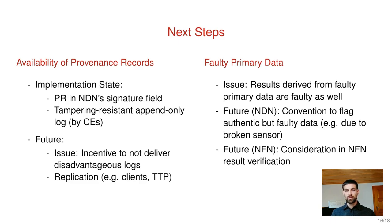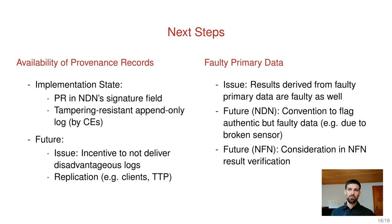We should also assume that results are faulty if they are derived from faulty data. For instance, if there is a broken sensor in a weather station and the sensor values are published in the network, then transformations — for example from Fahrenheit to degrees Celsius — are also considered faulty. We think this is a topic for NDN in general: there should be conventions to flag faulty content even though it is authentic, and we think it is worth integrating this into the NFN result verification procedure.